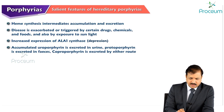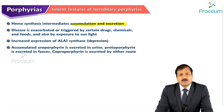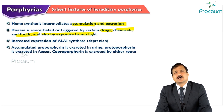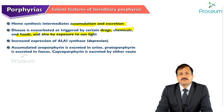In porphyrias, heme synthesis intermediates accumulate in the tissue and are excreted in the urine. Porphyrias are exacerbated or triggered by certain drugs, chemicals, and foods because these induce cytochrome P450 enzymes. Cytochrome P450 needs heme, so the heme synthesis pathway is increased, leading to accumulation of heme synthesis intermediates wherever the block is in that disorder.